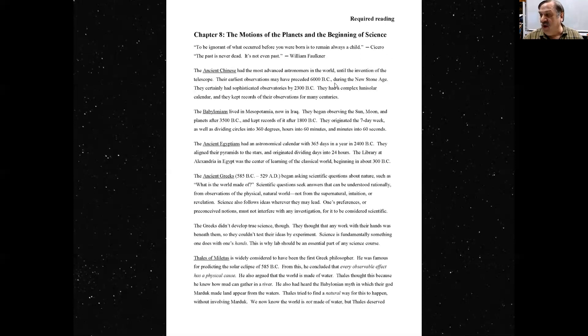The earliest observatories may have preceded 6000 BC, during the New Stone Age, even before they had bronze or iron or refined metal of any kind. They certainly had sophisticated observatories by 2300 BC. They had a complex lunasolar calendar, and they kept records of their observations for many centuries.